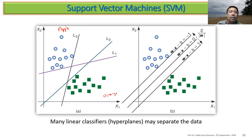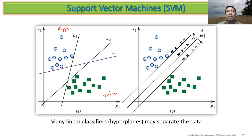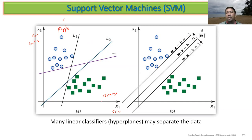For example, with two objects — apple and orange — you can draw lines L1, L2, or L3. All three can classify the data correctly. The function of SVM is to find the maximum separable line. Because when we train and expect new data, if you choose L1 and a new data point appears near the boundary, it might be misclassified. The SVM finds the maximum margin so that even new data points near the boundary can still be classified correctly.